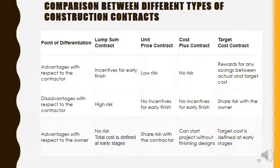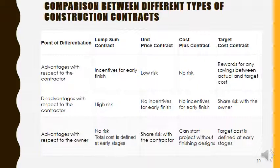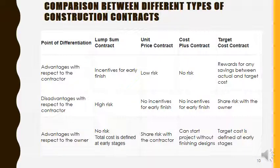Now comparing types of construction contracts — lump sum, unit price, cost plus, and target cost. Advantages with respect to the contractor: in lump sum, if you finish early you benefit; in cost plus there is low or no risk; in target cost contract, there is a reward for any savings between actual cost and target cost.